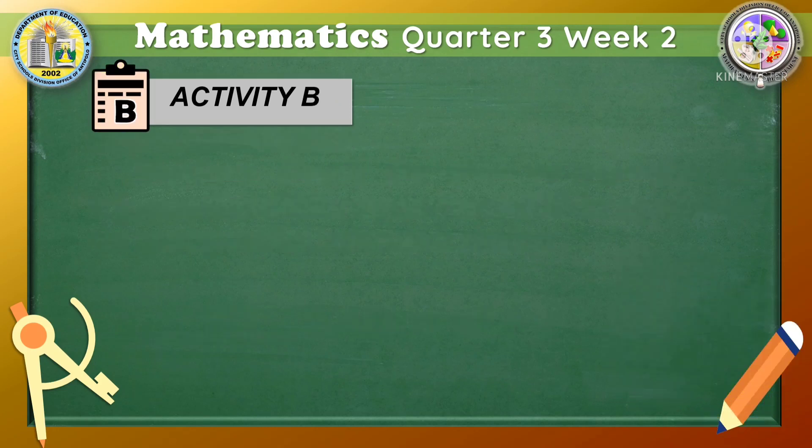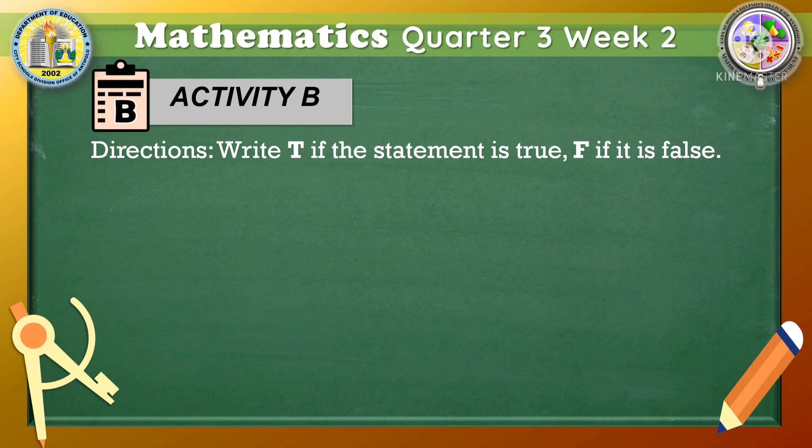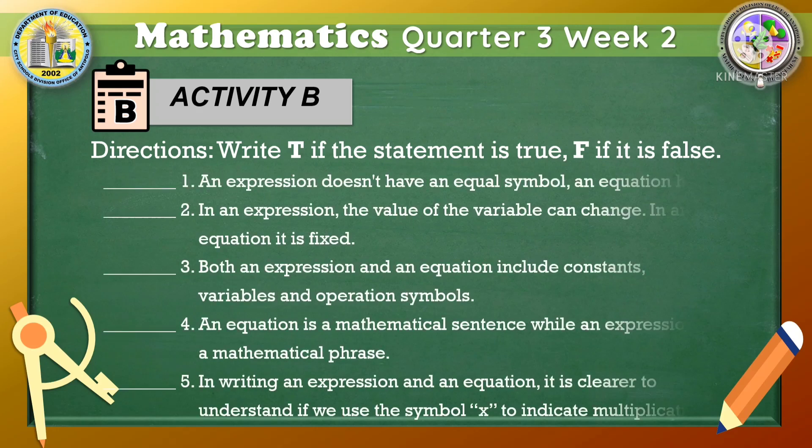I hope the lesson gets clearer to you by now because at this point, you will answer activity B, wherein you are going to read each statement and tell if it is true or false. Directions: write T if the statement is true, F if it is false. Here are the 5 given statements. Again, I will answer the first item for you to be guided.